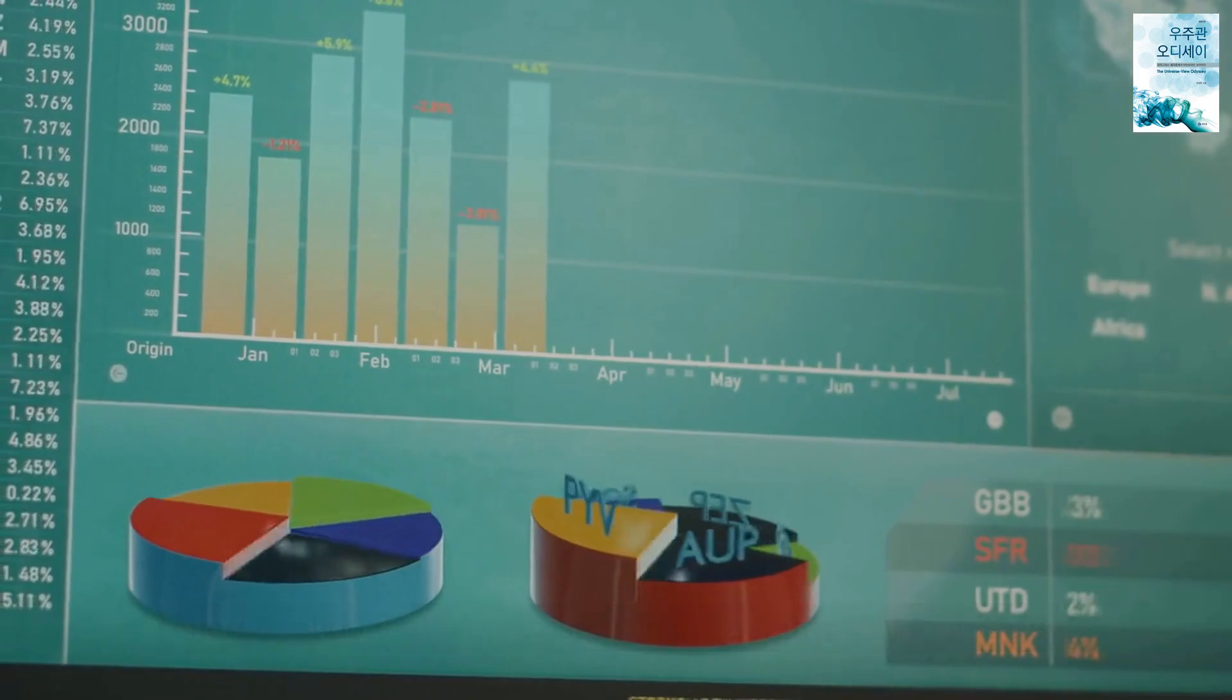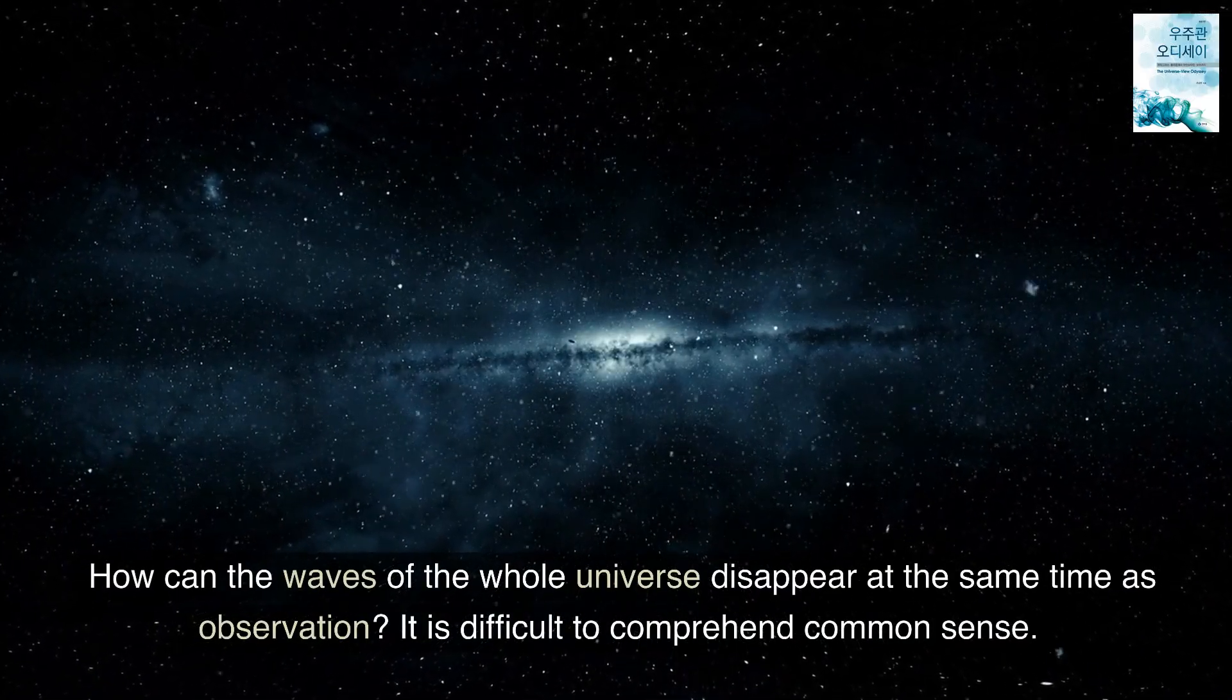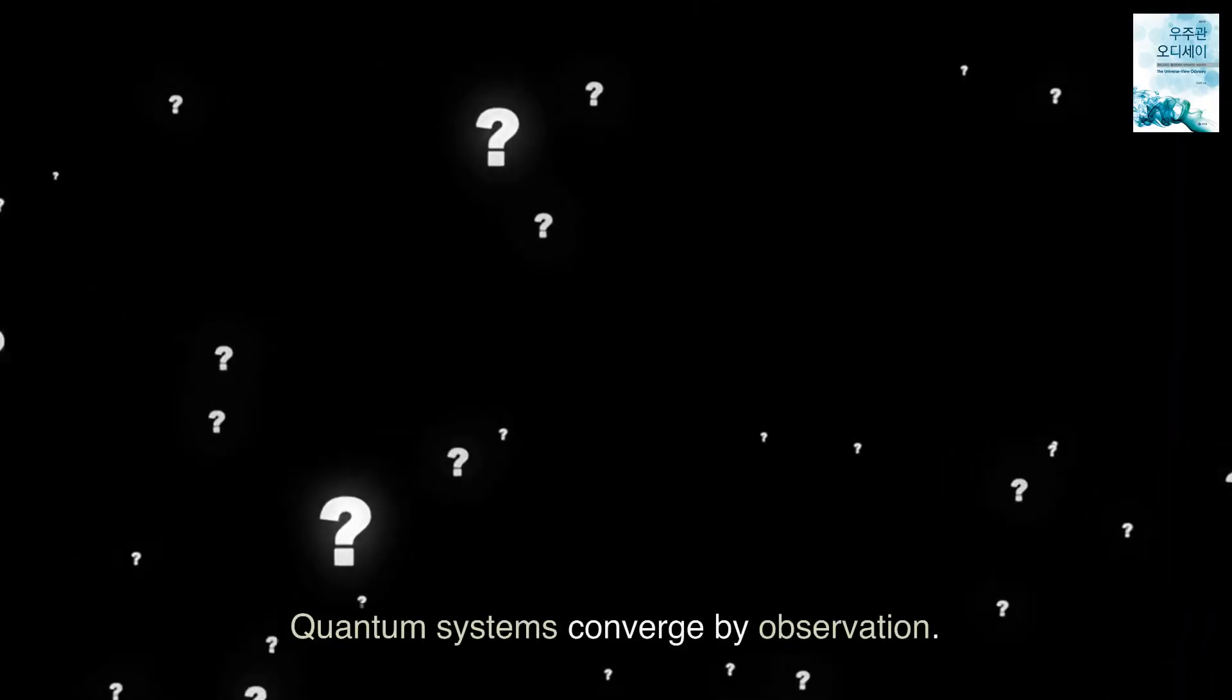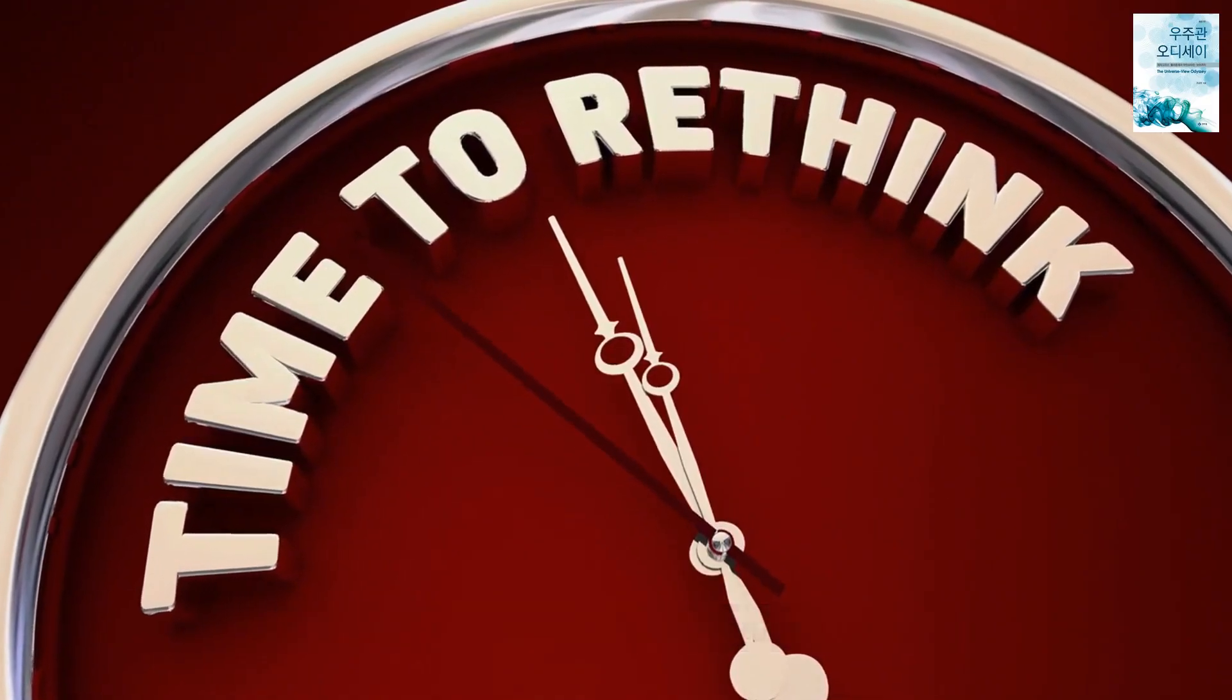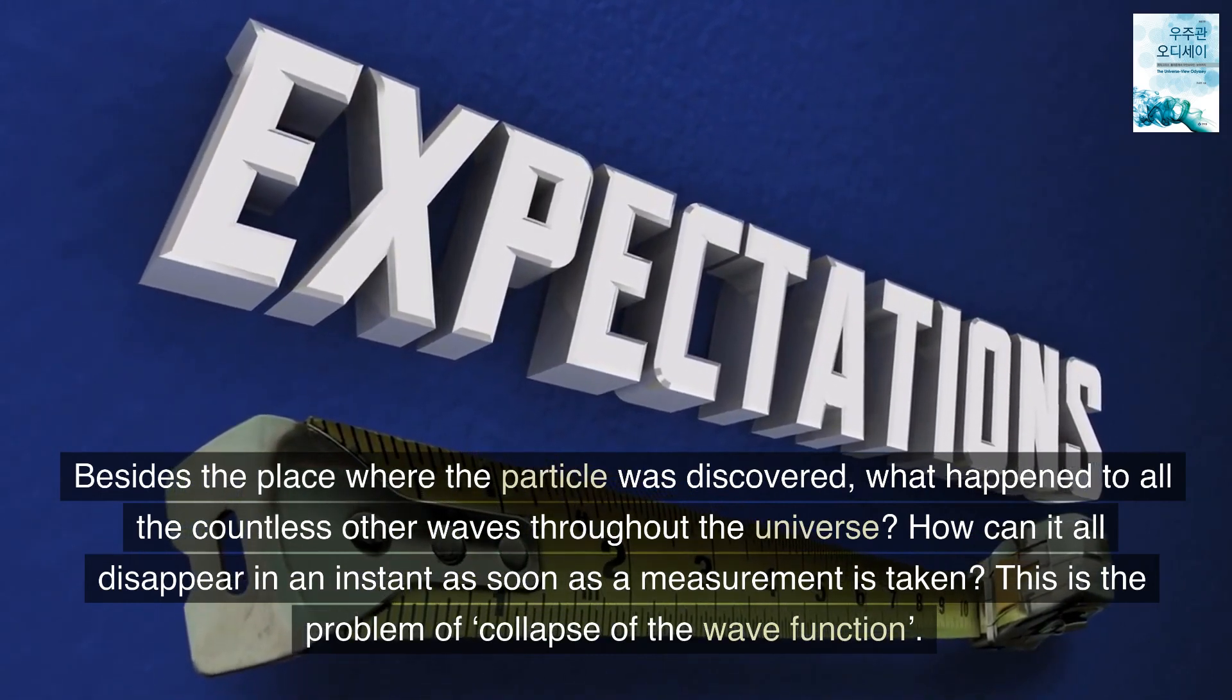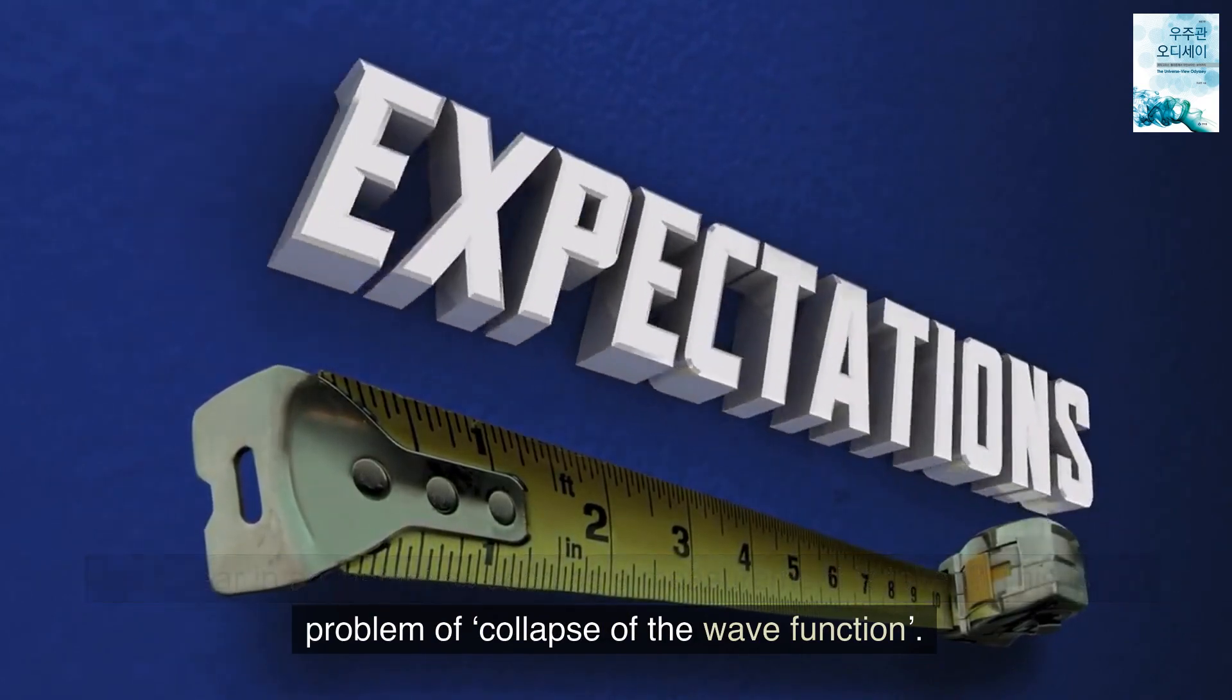The act of measuring causes a wave function collapse, is one part of the interpretation that has caused a lot of controversy to this day. How can the waves of the whole universe disappear at the same time as observation? It is difficult to comprehend common sense. The Copenhagen interpretation of this question is as follows. Quantum systems converge by observation. That is, a discontinuity inevitably occurs at the moment of measurement. But this assumption raises another question. Besides the place where the particle was discovered, what happened to all the countless other waves throughout the universe? How can it all disappear in an instant as soon as a measurement is taken? This is the problem of collapse of the wave function.